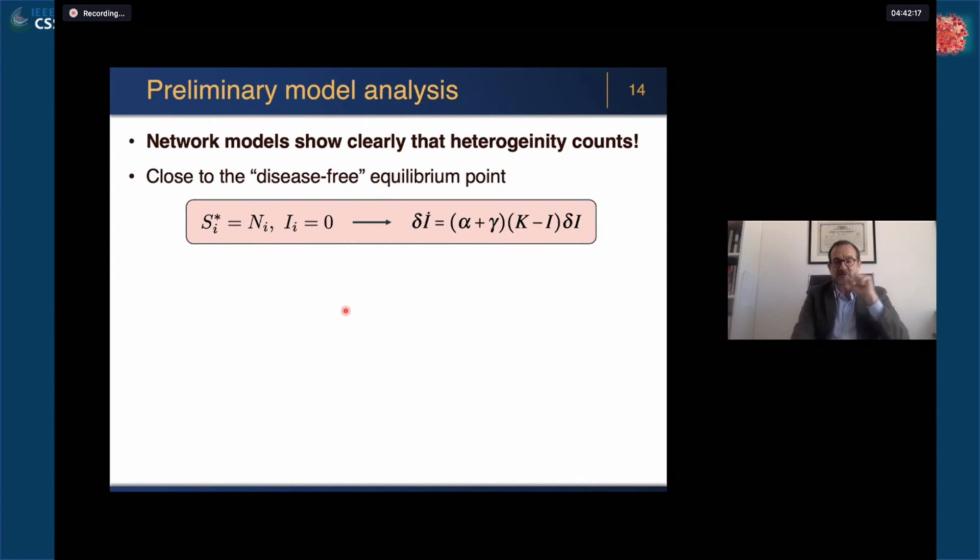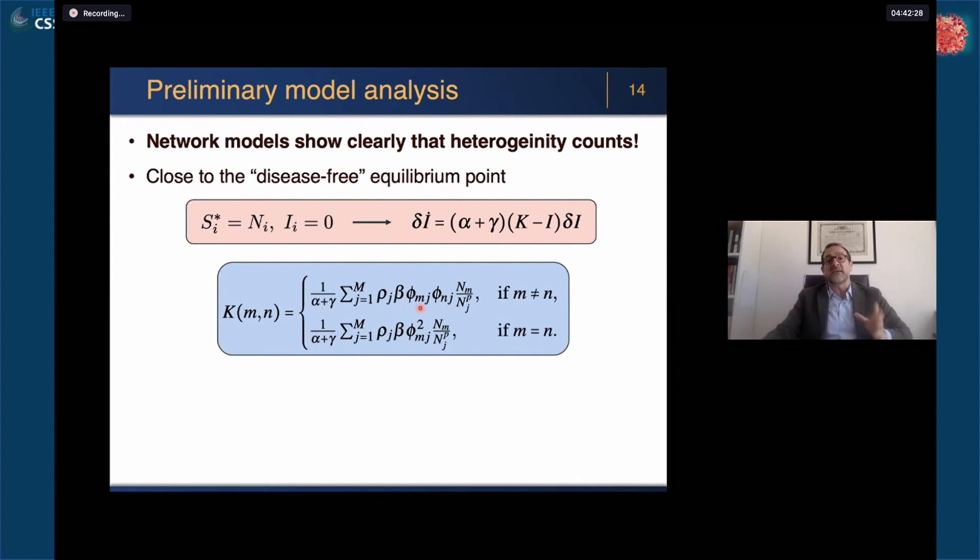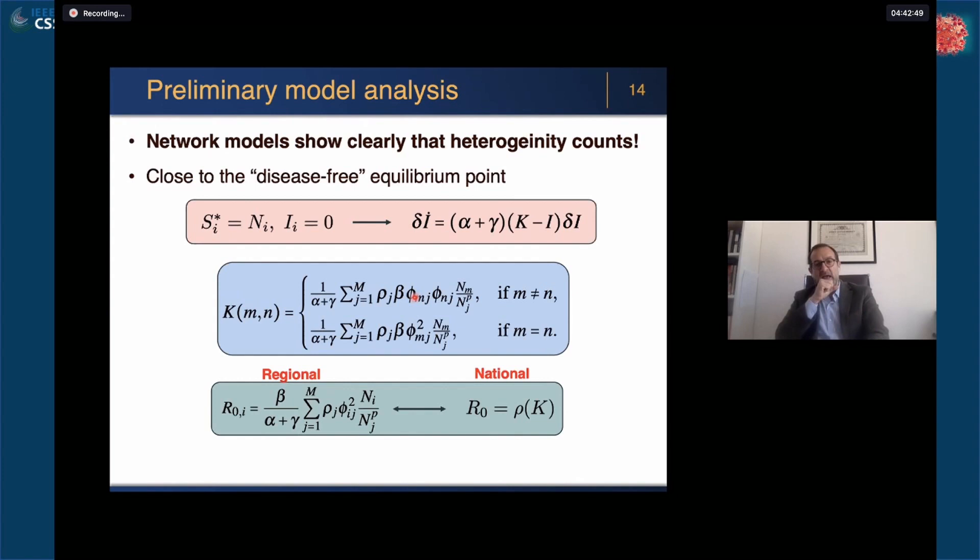Why does this heterogeneity count? Because if you do a local analysis at the beginning of the epidemics, something like Francesco did before me, it's very essential to look at this matrix K. This matrix K is the well-known next generation matrix that depends on the social distancing effects in that region and on the flows through and out of that region.